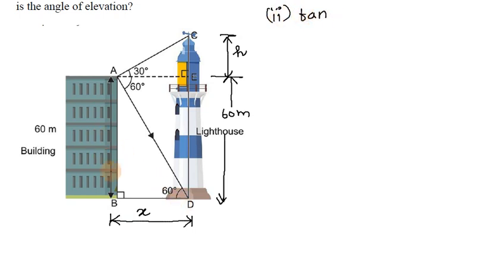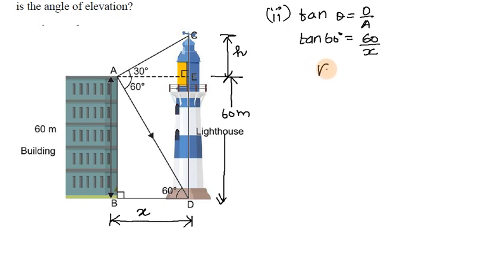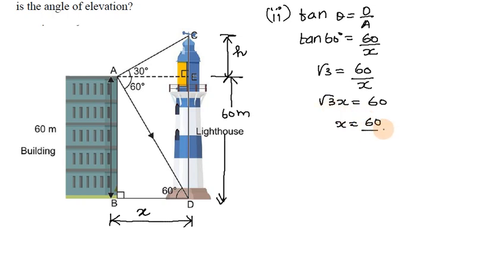Using tan theta equals opposite over adjacent: tan 60° equals 60 divided by x. Since tan 60° equals root 3, we get root 3 equals 60 divided by x. Cross multiplying gives root 3 times x equals 60, so x equals 60 divided by root 3.